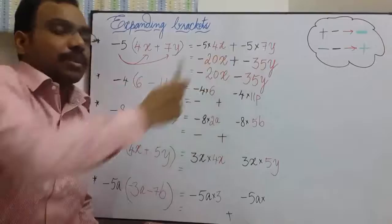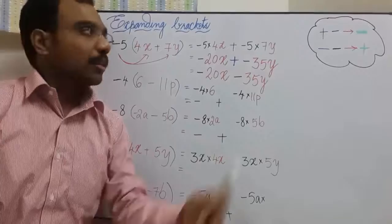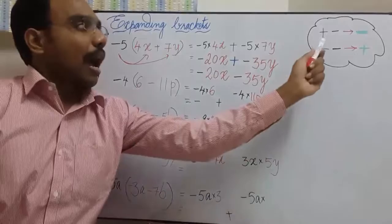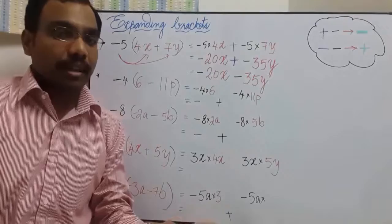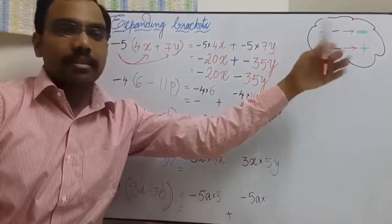Before proceeding further, let us understand something about symbols. When two symbols are together, adding a negative number is same as subtracting. Adding sadness is same as subtracting happiness.